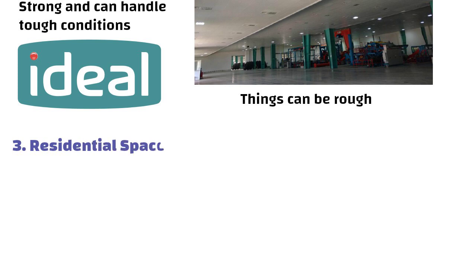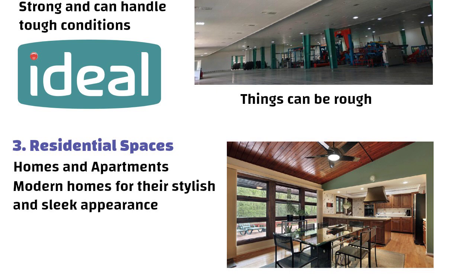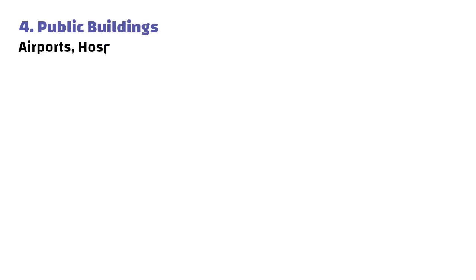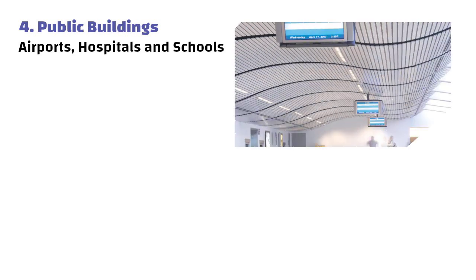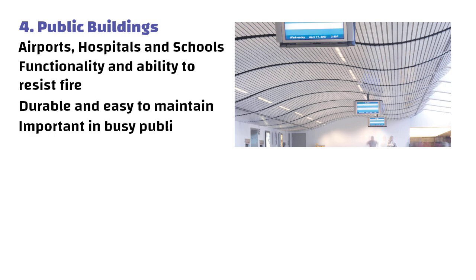Third, Residential spaces like homes and apartments. Metal ceilings are used in modern homes for their stylish and sleek appearance. Fourth, Public buildings like airports, hospitals and schools. Metal ceilings are chosen for their functionality and ability to resist fire. They are durable and easy to maintain, which is important in busy public areas.